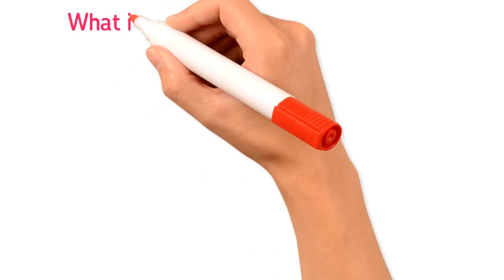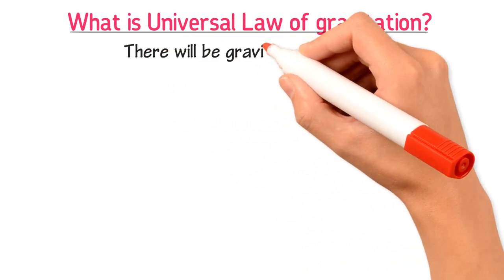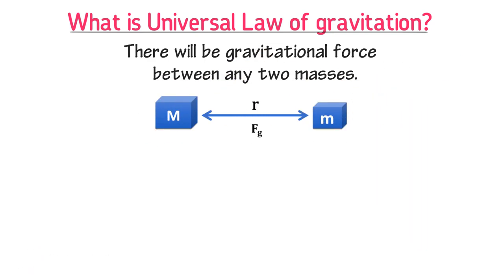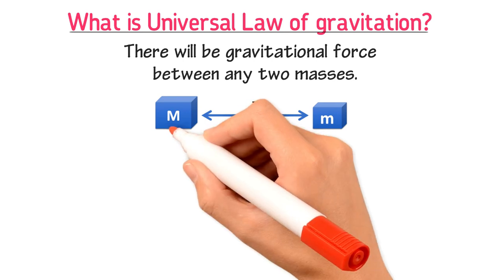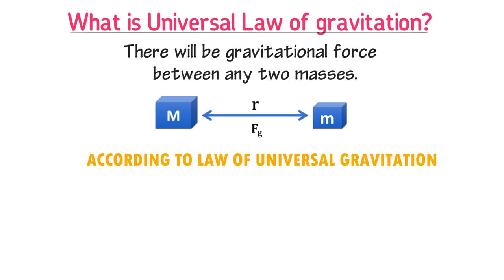The universal law of gravitation states that there will be a gravitational force between any two masses or any two bodies. For example, consider two objects: let the mass of one object be capital M and the mass of the other be small m. Let the distance between the centers of these two objects be R. According to Newton's universal law of gravitation, there is an attractive gravitational force between these two masses.